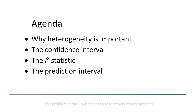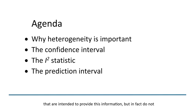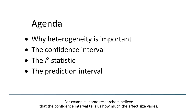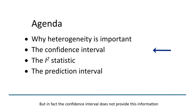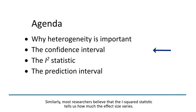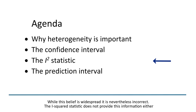The problem is that in most cases, researchers report statistics that are intended to provide this information but in fact do not. For example, some researchers believe that the confidence interval tells us how much the effect size varies, but it does not provide this information. Similarly, most researchers believe that the I-squared statistic tells us how much the effect size varies, but while this belief is widespread, it is nevertheless incorrect.